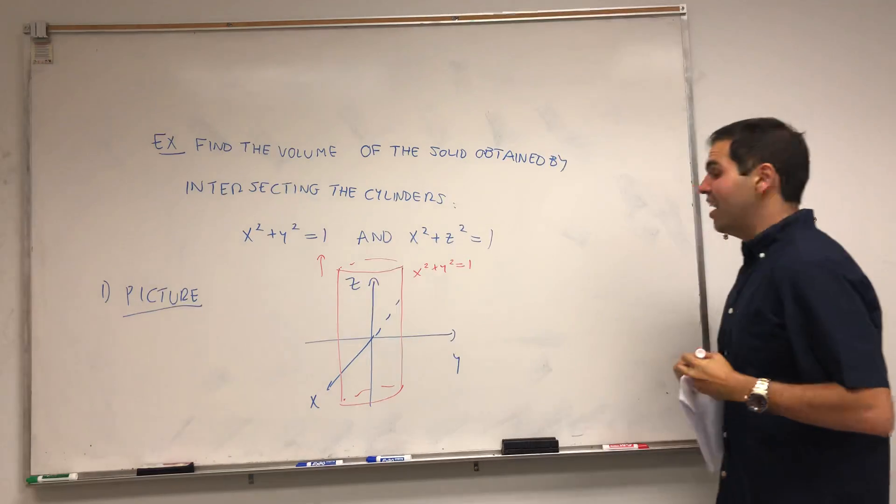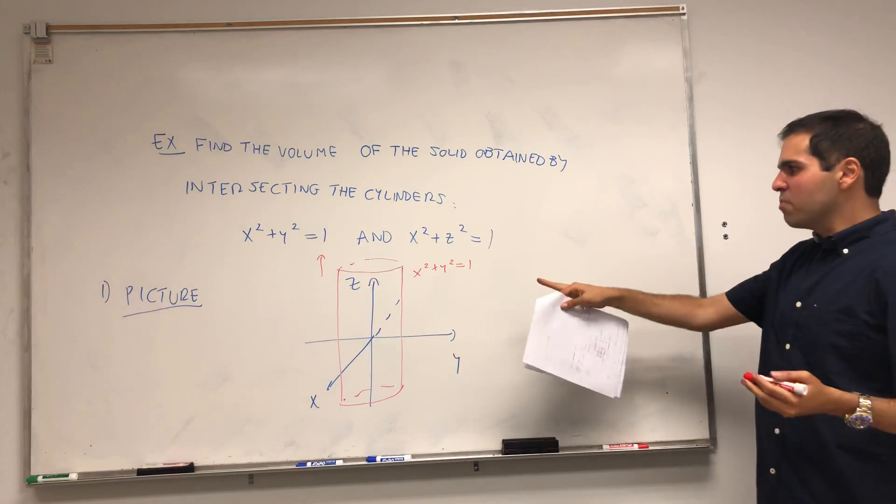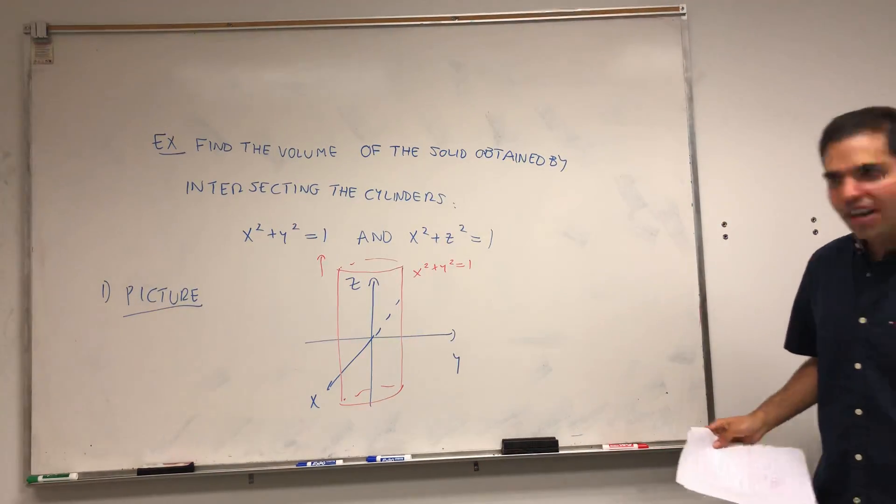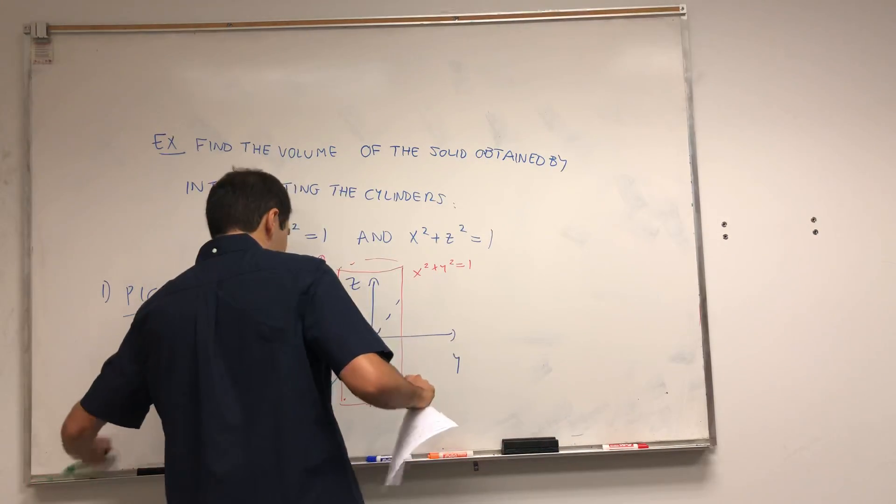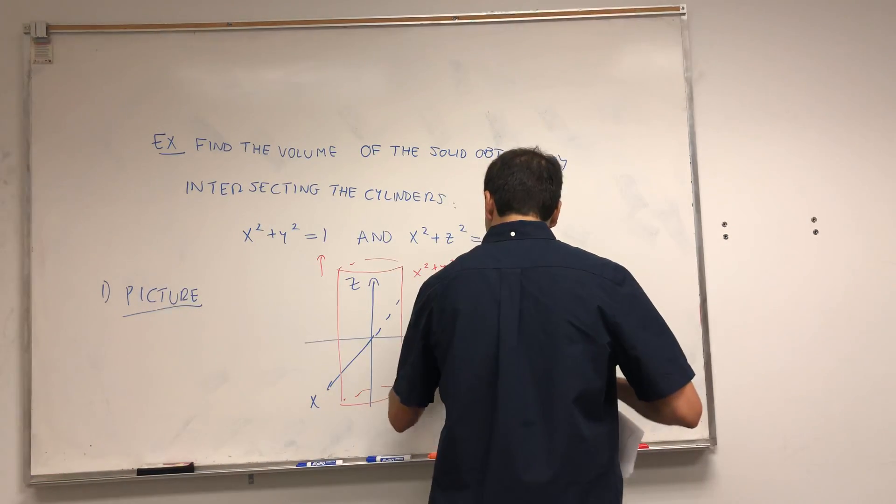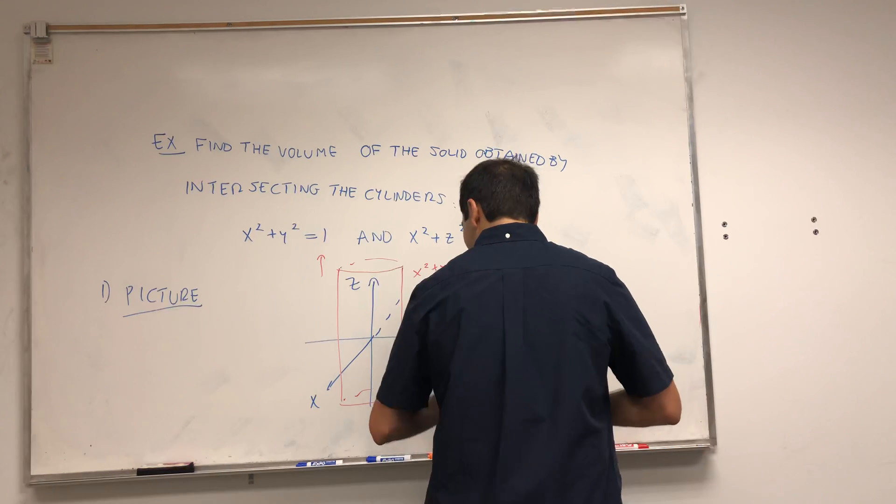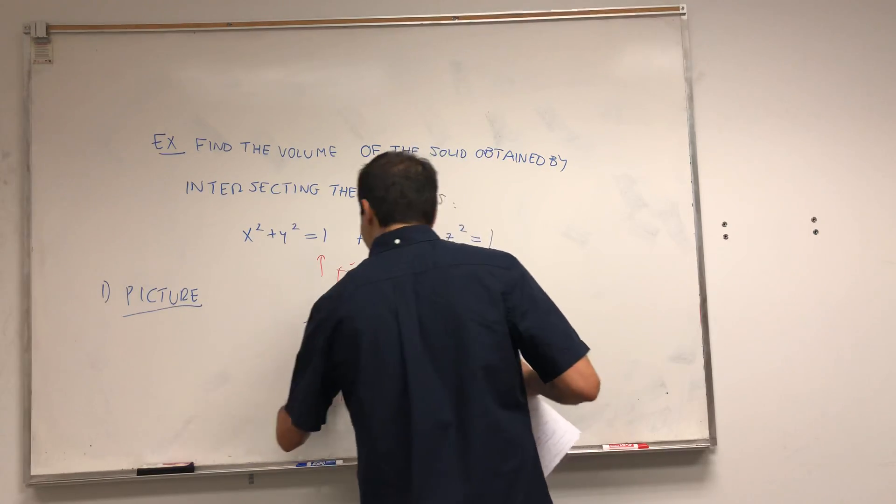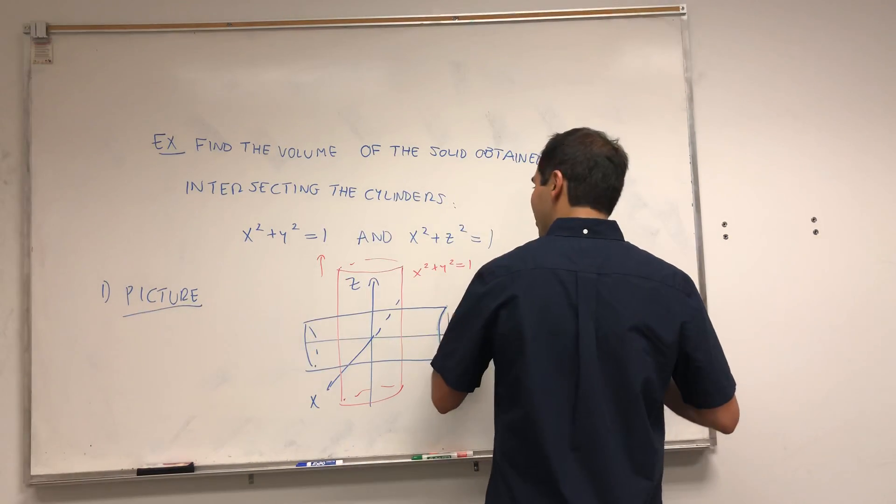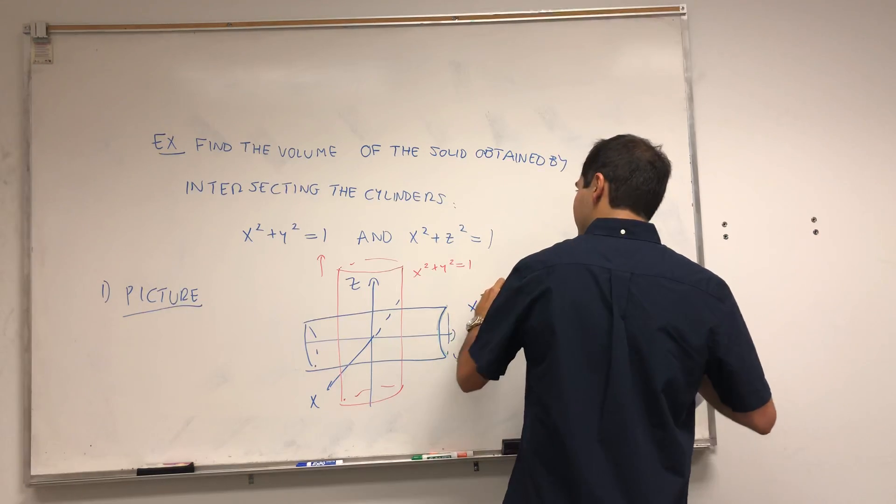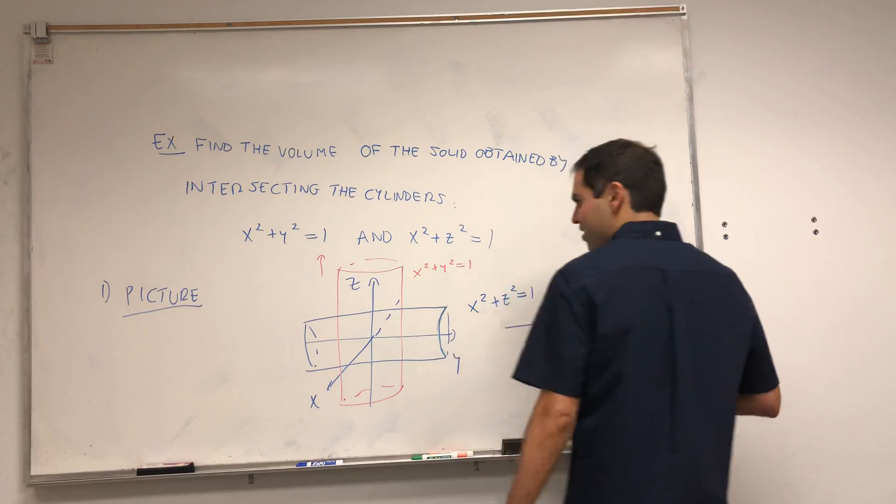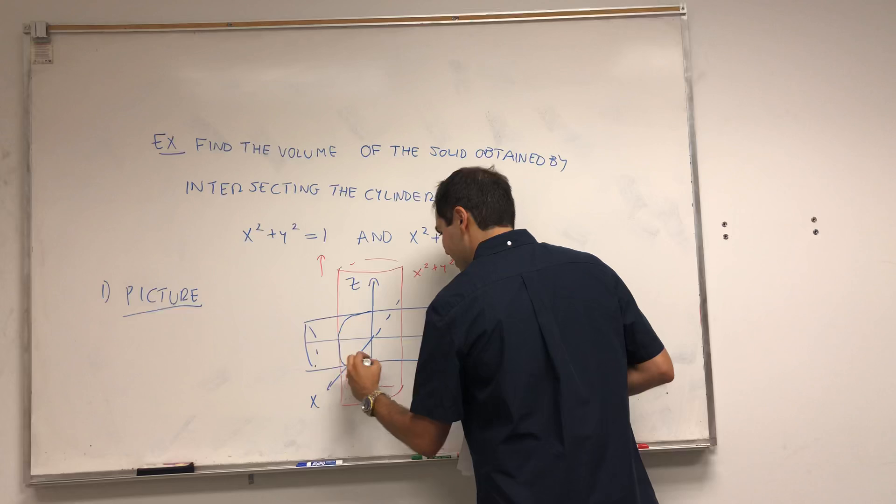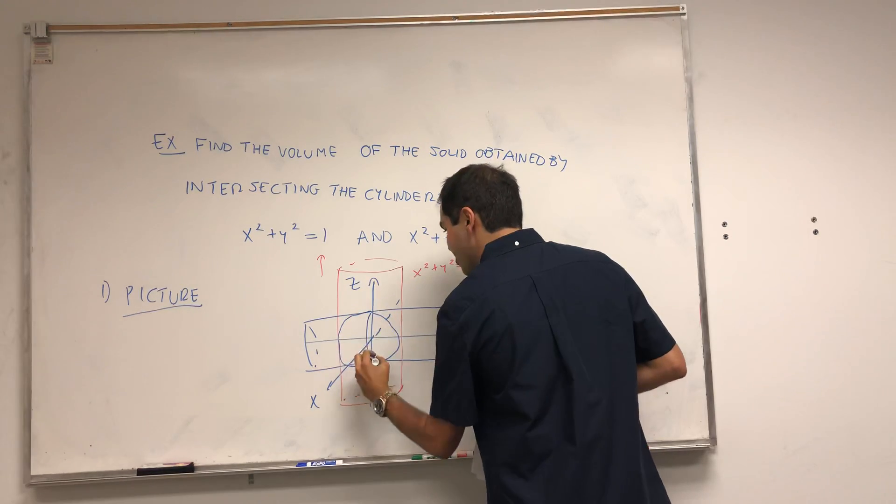So again, it's in the z direction. On the other hand, x squared plus z squared equals 1 doesn't depend on y. So you can basically translate it in the y direction. So maybe this cylinder. Sorry, this color is not blue. I'm feeling blue. Okay, so that becomes x squared plus z squared equals 1. And again, the intersection is so hard. I can't even draw it, but think of something like this. It's what's called the Steinmetz solid.